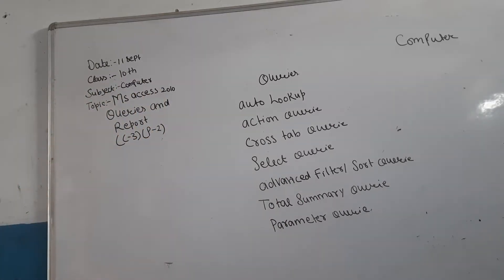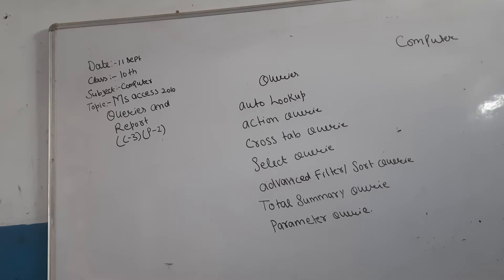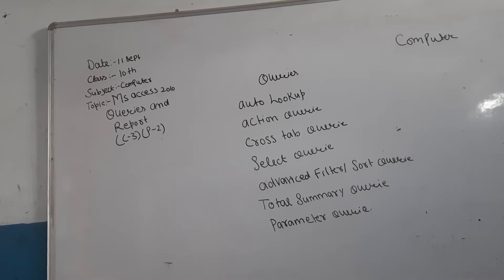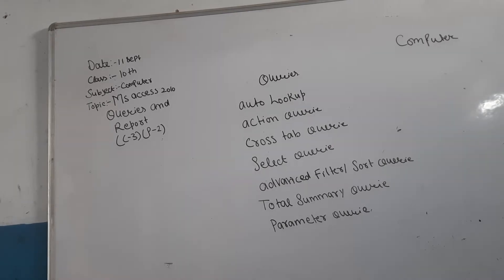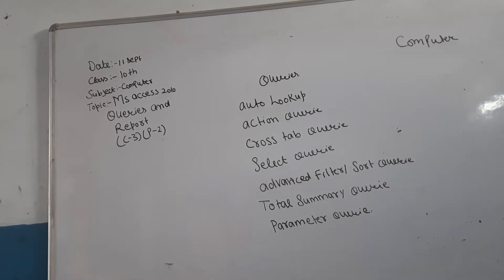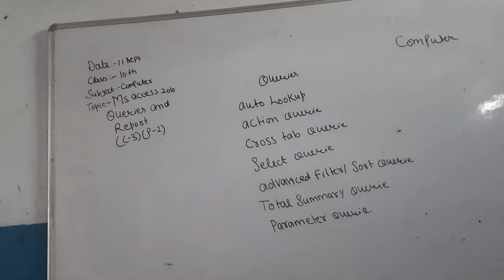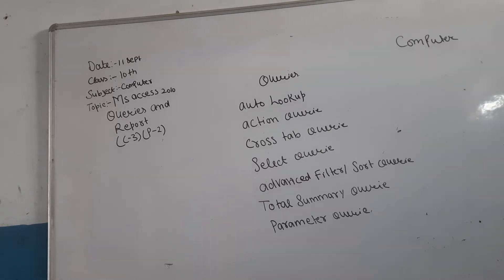There are seven types of queries. Autolookup query: this query sends information in the table on your behalf. Action query: you can use it for modifying, deleting, and adding data from one table to another. Crosstab query: this query shows a table with the value of one field at the top and the value of another field at the left edge below.